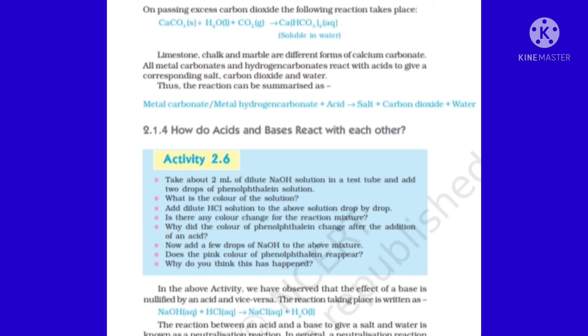The formula of limestone is CaCO3. The same way, chalk formula is also CaCO3, and also marble formula is also CaCO3. So these three are different forms of calcium carbonate. Limestone, chalk, and marble—the formula is CaCO3.